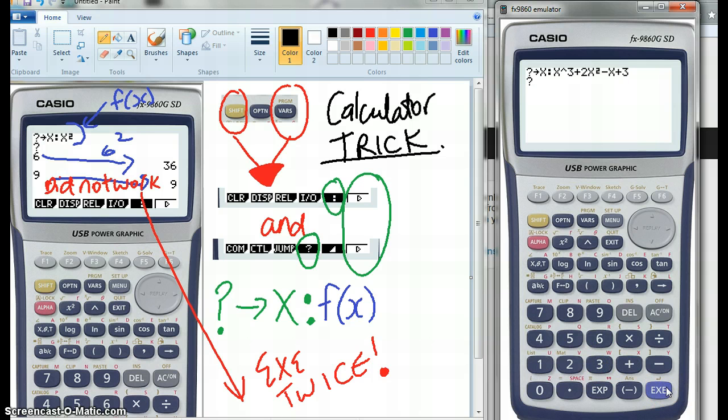So we're going to get a negative 2 and we get 5. Hit execute to get the question mark back. Put 3 in there, we get 45.